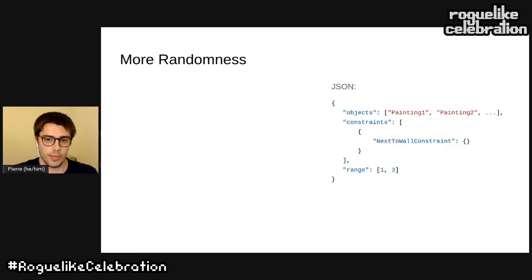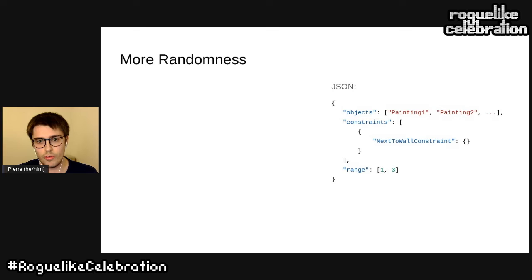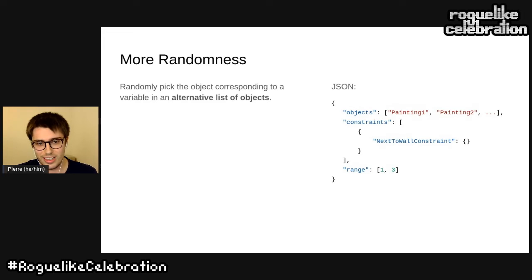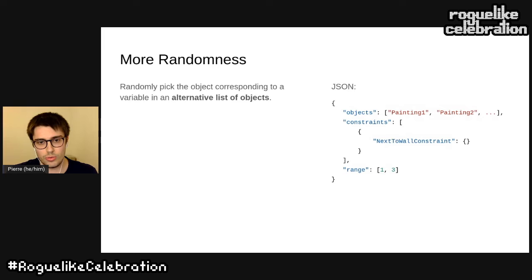I describe my rooms in JSON files. For a given variable, I sample from a list of objects — for example, I want to place a painting in the room, but I choose among a list of paintings. This helps add variability to the room.